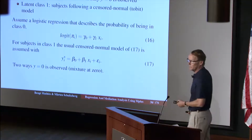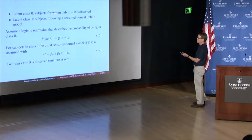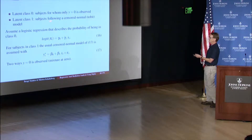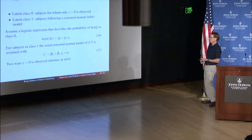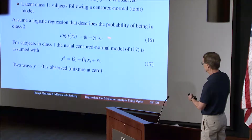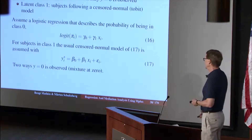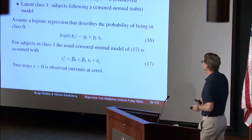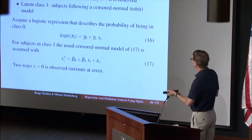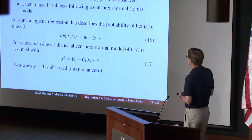So we're going to go to censored inflated regression, where we end up with one equation with gamma one and one equation with beta one — making those slopes different, just like we did for zero-inflated Poisson to make it more flexible. Once again, we have a latent class zero: subjects for whom only y equals zero is observed. And a class one: subjects following a censored normal Tobit model. So we have logistic regression describing the probability of being in class zero — a linear logit model, standard logistic regression. And for subjects in class one, we have the usual censored normal for y-star. There are two ways y equals zero is observed; it's a mixture at zero, just like for the count. Inflation means you have a class at zero and a class that can be above zero, which helps model the outcome in a more flexible way with two different slopes.